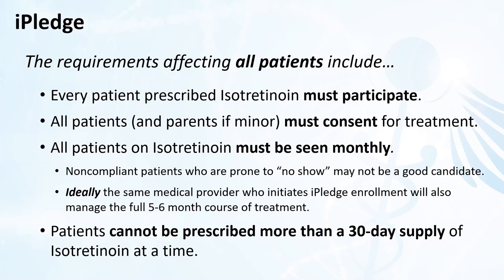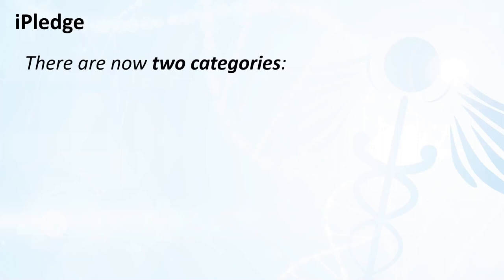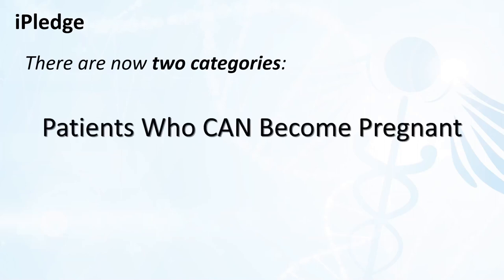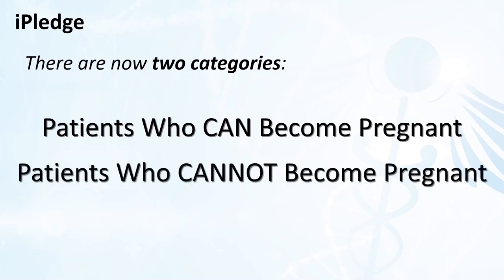These are the rules which affect everyone. Additional rules apply, but those vary depending on the category to which the patient is assigned. In iPledge, there are two categories: patients who can become pregnant, and patients who cannot become pregnant. Sounds pretty straightforward, but it can get a little tricky. Before we explain what we mean, we need to first provide a few definitions for those who may not be familiar.